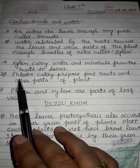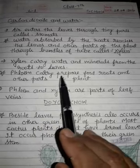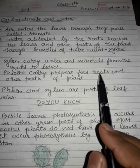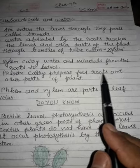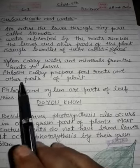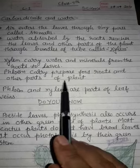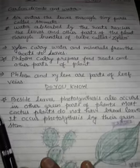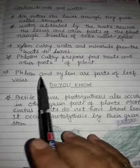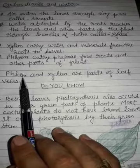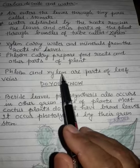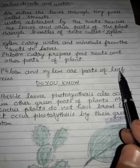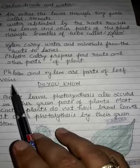Phloem carries prepared food to the roots and other parts of the plant. Phloem and xylem are part of the leaf veins.